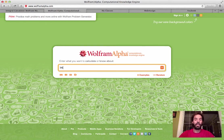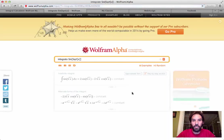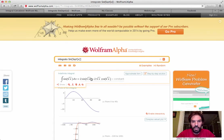For example, if I write integrate sine of square root of x, then Wolfram Alpha should be able to calculate the integral right away. Indeed, it gives me the integral and now it has the constant, which is great.